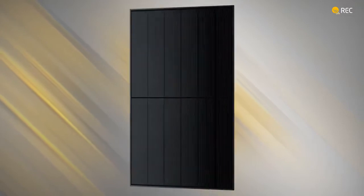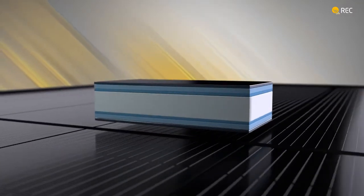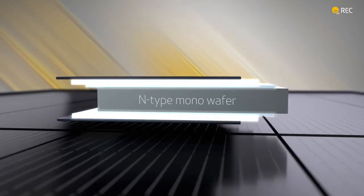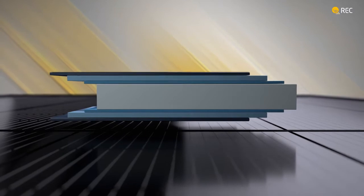To make such a high-power solar panel, we start with the most efficient crystalline cell technology. N-type mono wafers are sandwiched between two layers of amorphous silicon, which act as passivation.